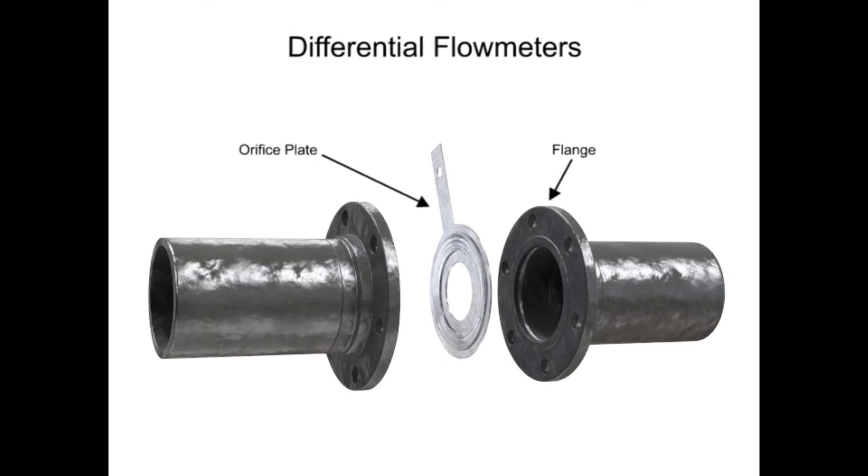The differential flow meter, whether Venturi tube, flow nozzle, or orifice plate style, is an inline instrument that is installed between two pipe flanges.